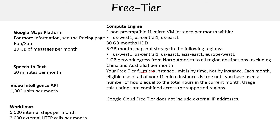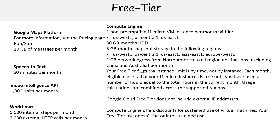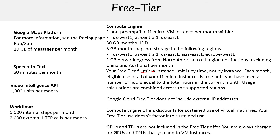Google Cloud free tier does not include external IP addresses. Compute Engine offers discounts for sustained use of virtual machines, but free tier usage doesn't factor into sustained use discounts. GPUs and TPUs are not included in the free tier — you're always charged for GPUs and TPUs that you add to VM instances. That makes sense because they're physical pieces of hardware and they're really expensive.